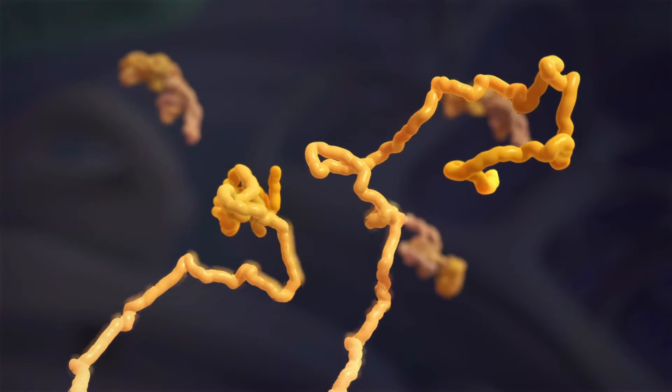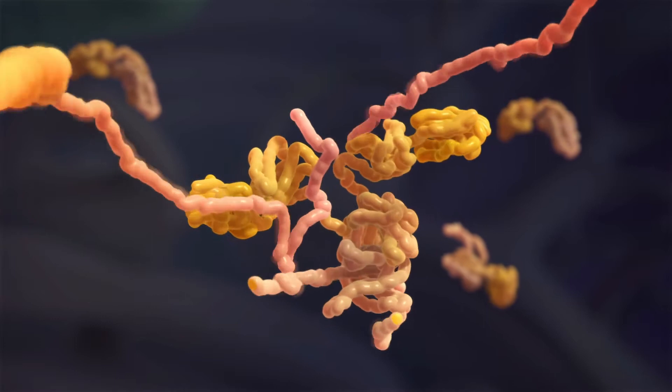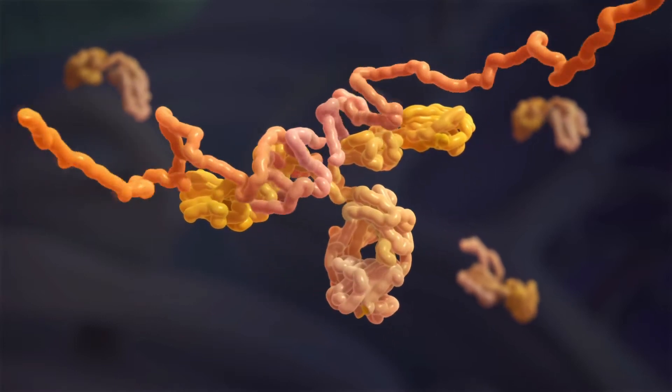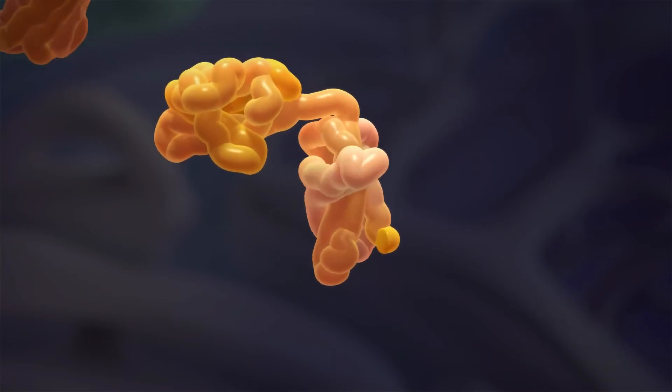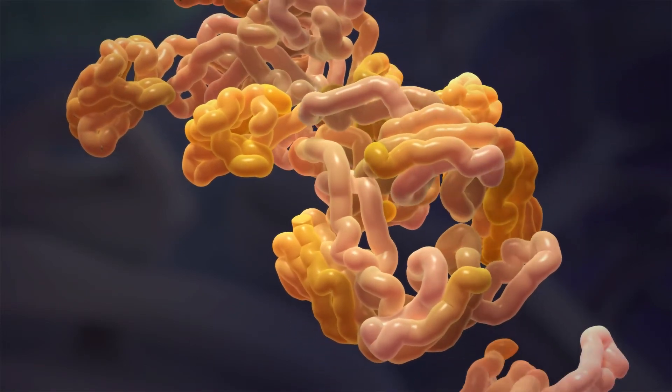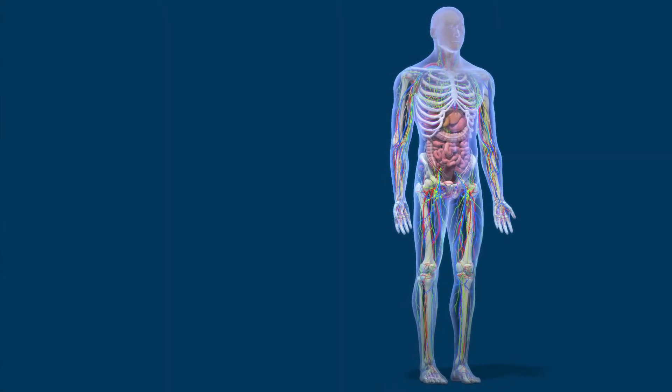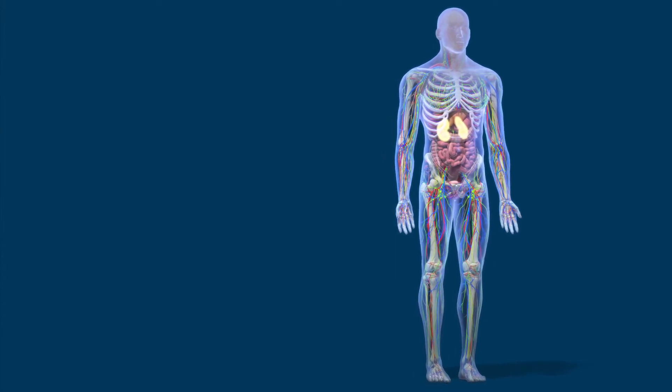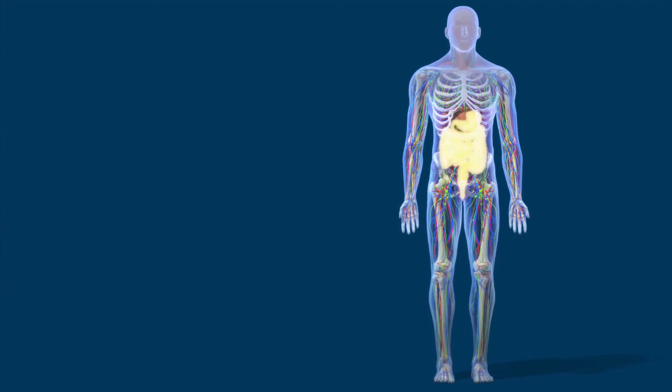In AL amyloidosis the plasma cells produce abnormal light chains. They still attach to heavy chains to form the complete antibody but the abnormal unattached or free light chains are prone to misfolding and aggregate to form fibrils which deposit as amyloid in various tissues and organs including the kidneys, heart, nervous system, liver and digestive system.